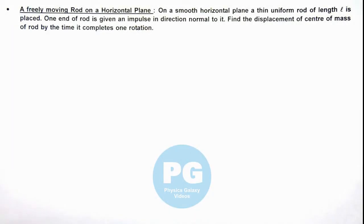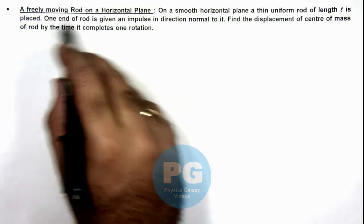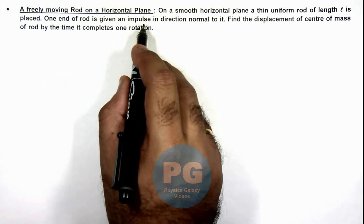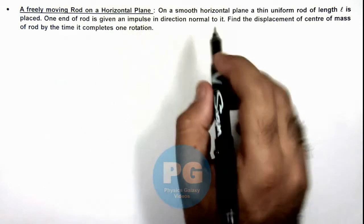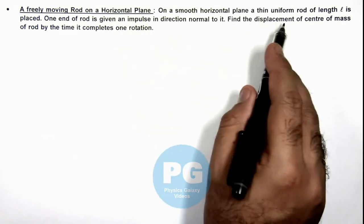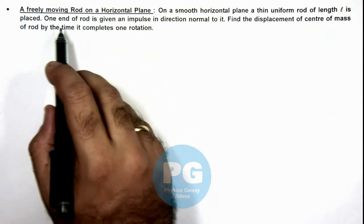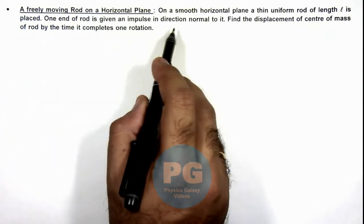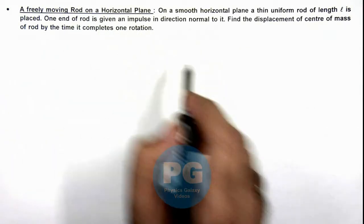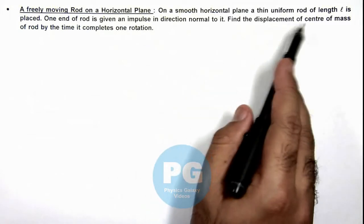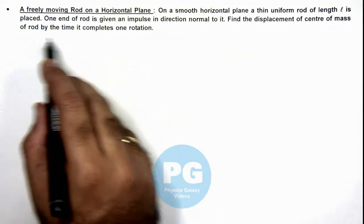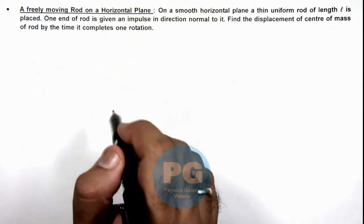In this illustration, we'll analyze a freely moving rod on a horizontal plane. Here we are given that on a smooth horizontal plane a thin uniform rod of length l is placed. One end of rod is given an impulse in direction normal to it, and we are required to find the displacement of center of mass of rod by the time it completes one rotation.